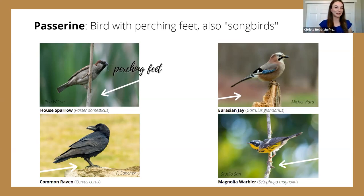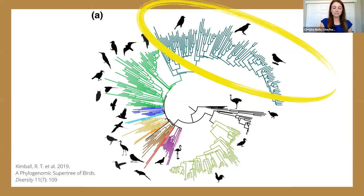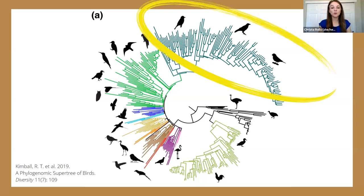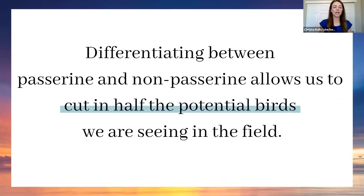About half of all birds in the world are passerines. That means in your field guide, roughly half the birds are passerines. So in any given area, the potential birds you could be seeing are cut approximately in half — half passerines, half non-passerines. If you can differentiate between these two groups in the field, you've potentially already cut in half the number of birds you're searching through.